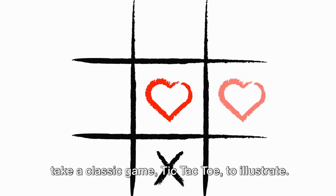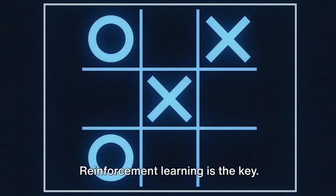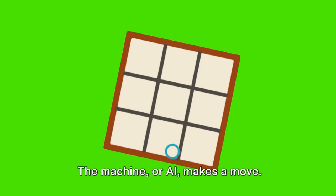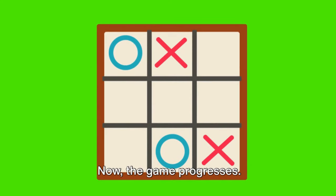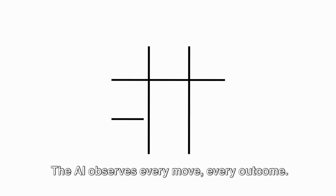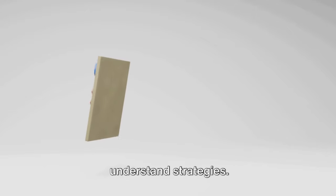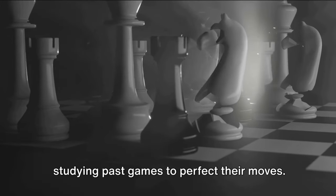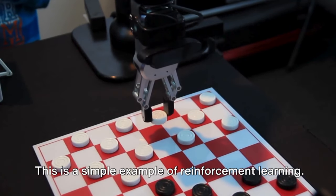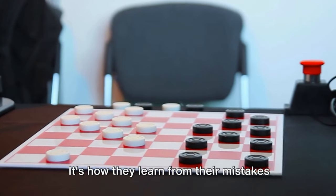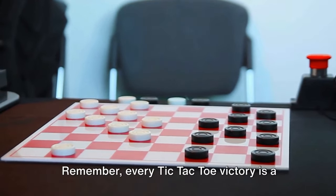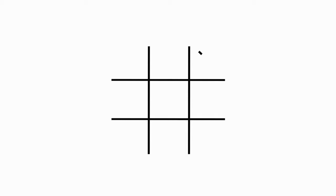Ever wonder how machines learn? Let's take a classic game tic-tac-toe to illustrate. Reinforcement learning is the key. Imagine a blank tic-tac-toe board. The machine or AI makes a move. At this stage, it doesn't know what's right or wrong. It's exploring like a toddler learning to walk. Now the game progresses. The AI observes every move, every outcome. It starts to recognize patterns, understand strategies. It learns from every victory, every defeat. This learning process is iterative. The AI plays countless games, refining its strategy with each. It's like a grandmaster chess player studying past games to perfect their moves. This is a simple example of reinforcement learning. It's how machines learn to play games, drive cars, even diagnose diseases. It's how they learn from their mistakes and improve over time, just like humans. Remember, every tic-tac-toe victory is a step towards a smarter future.